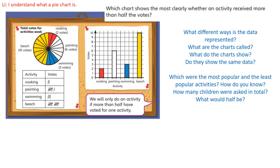The title of the graphs is the total votes for an activities week. So if we look at the bar chart first, we've got the activities along the bottom and we've got the votes up the sides. We can see that cooking got two votes, painting got six, swimming got three, and the beach was the most popular at ten.